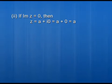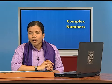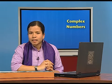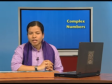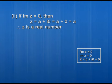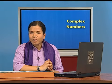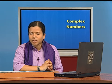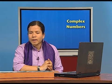The third possibility is when both the real part and imaginary part of z are 0. If Re(z) equals 0 and Im(z) equals 0, it means a equals 0 and b equals 0. Substituting into z gives z equals 0 plus i times 0, which equals 0. So when both the real part and imaginary part are 0, the complex number itself is 0.